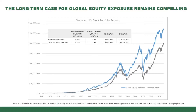We want to make the long-term case for global equity exposure — it remains a compelling story. Asset class equity markets go in cycles, and it's unwise to extrapolate recent or past performance trends too far into the future. A lot of times clients are overconfident in their ability to predict changes and trends. When you have a globally diversified, asset allocation-driven portfolio, you're always going to have some piece of that portfolio lagging while others are performing better.